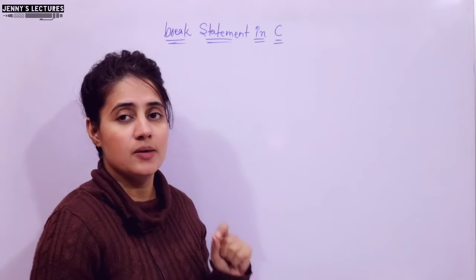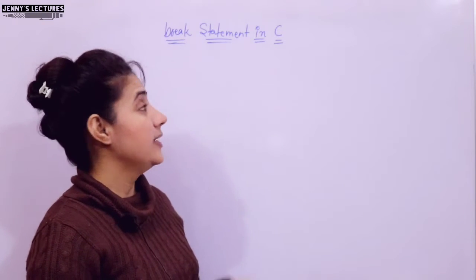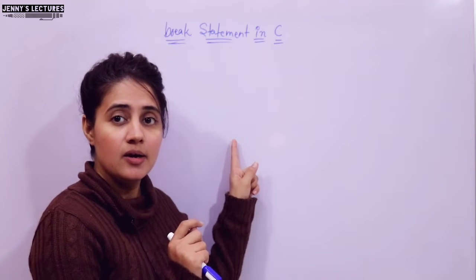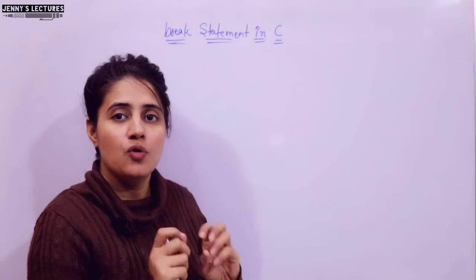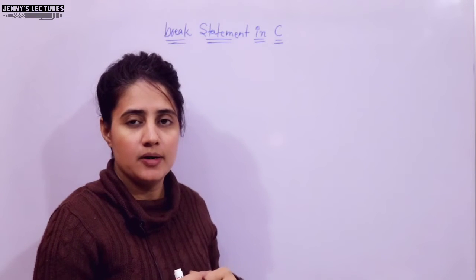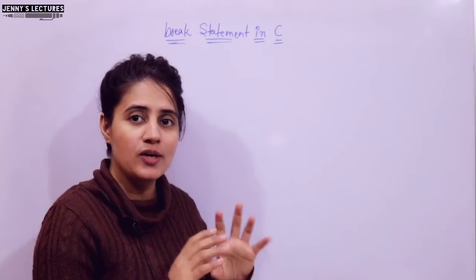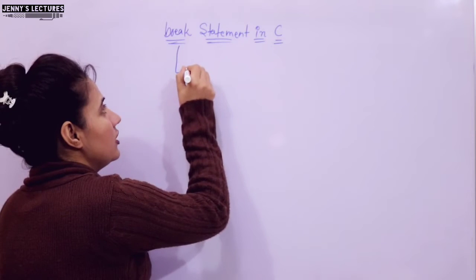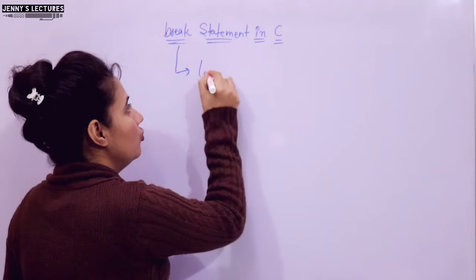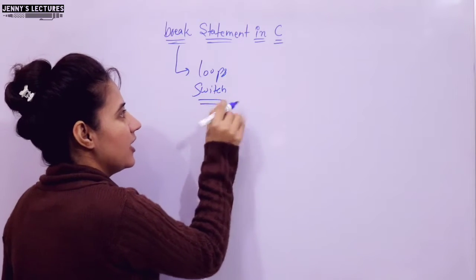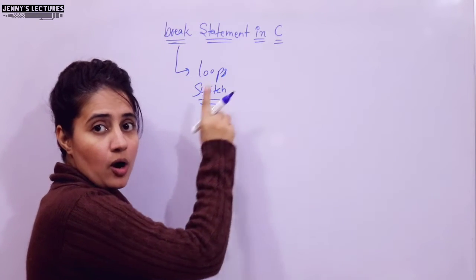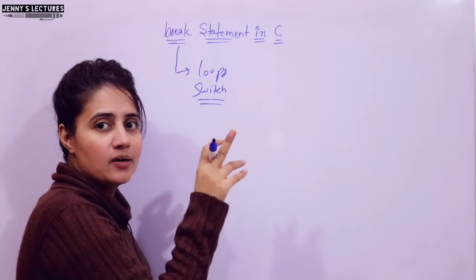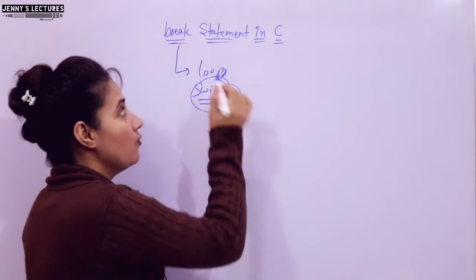So what is break in C? It is a control statement, or you can say break is a keyword in C - that is why we write it in small letters. If you want to exit from the loop early, then we use break statement. You can use break with loops and switch statements - how to use break in switch we have already discussed in a previous video.